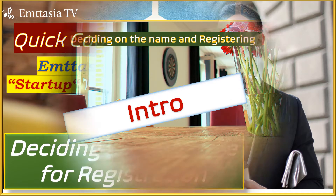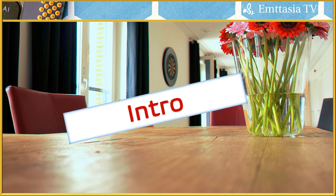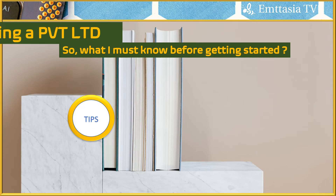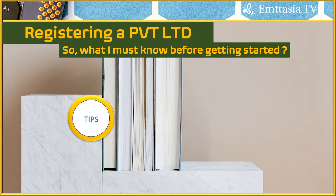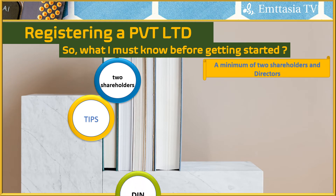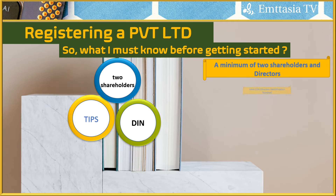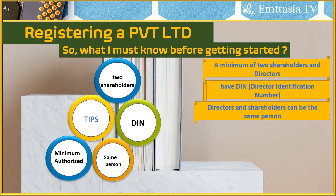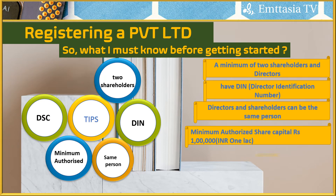Before getting started with registration, here are key points to know. A minimum of two shareholders and directors is required for a private limited company. All directors must have a DIN — Director Identification Number. Directors and shareholders can be the same person. The minimum authorized share capital is rupees 1 lakh. A DSC — Digital Signature Certificate — is required for two promoters and one witness.